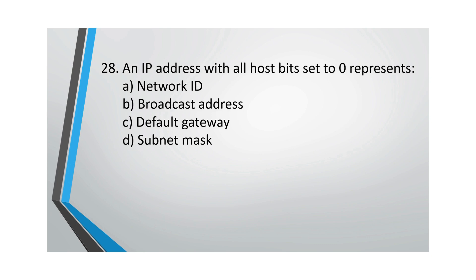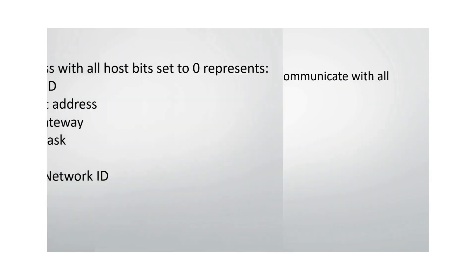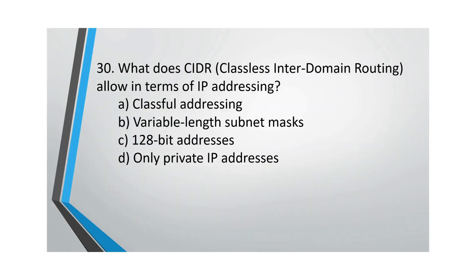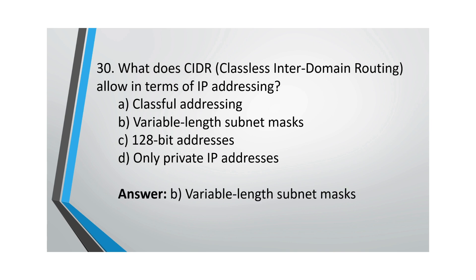Question 28–29: In IPv6, which address is used to communicate with all nodes on the link? The correct option is A. Question 30: What does CIDR allow in terms of IP addressing? The correct option is B, variable-length subnet masks.